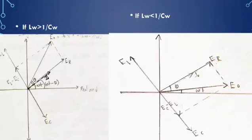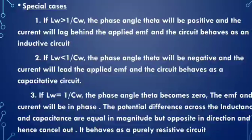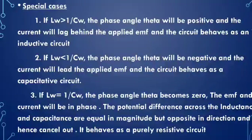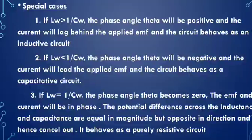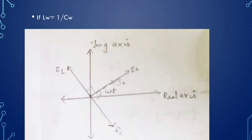In the second case, the current leads the applied voltage by angle θ. The third case is when ωL = 1/ωC, making the phase angle θ equal to zero — that is, (ωL − 1/ωC) = 0. The EMF and current are in phase, the potential differences across the inductance and capacitance are equal but opposite in direction and cancel out, so the circuit behaves as a purely resistive circuit.